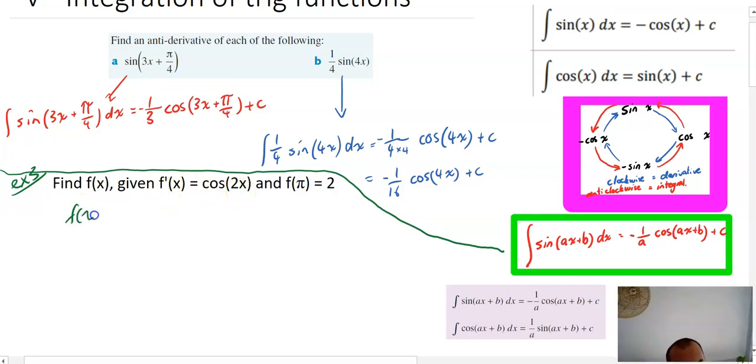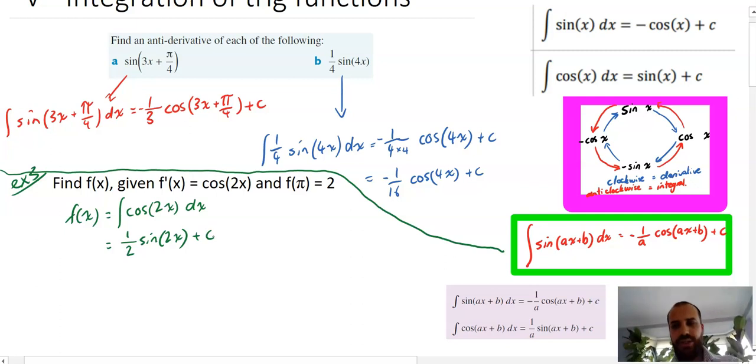All right so if f dash x equals cos 2x then f of x equals the integral of that with respect to x. Now that's going to be equal to 1 over 2, now cos becomes sine, 2x plus c.